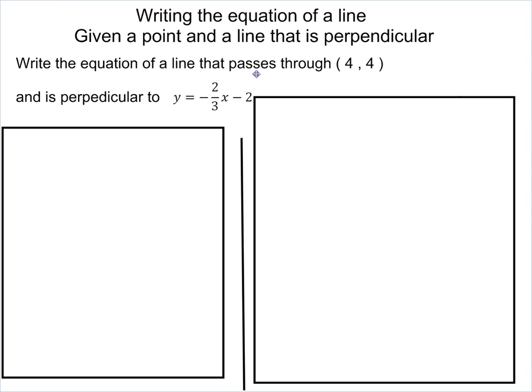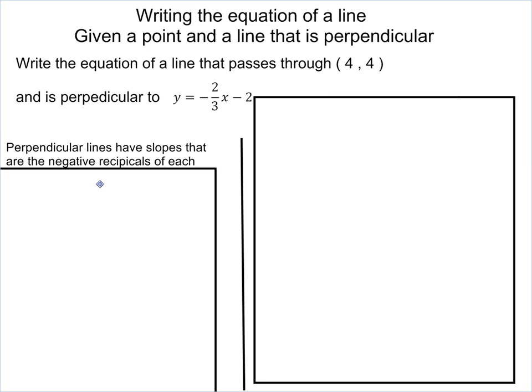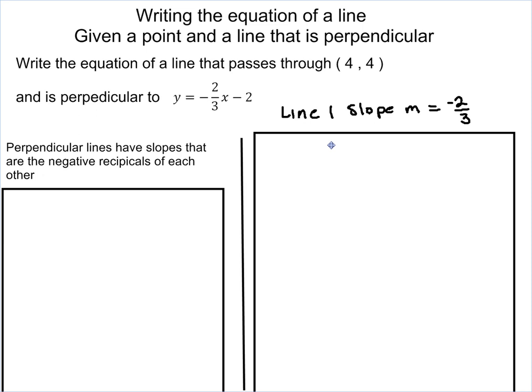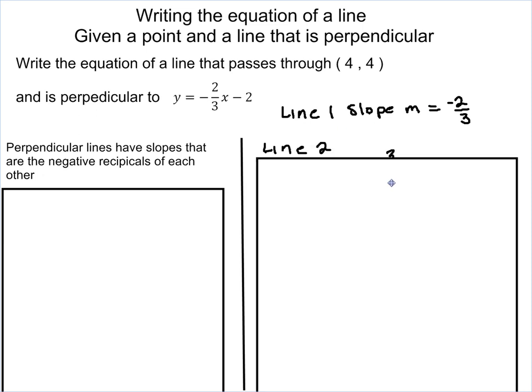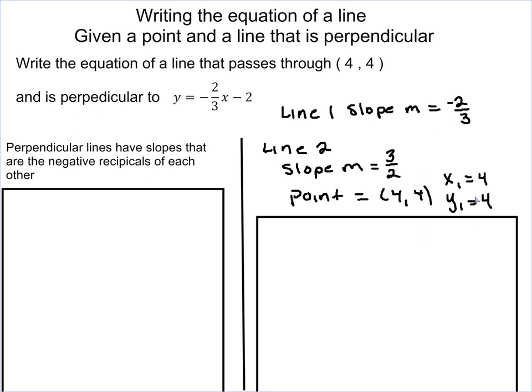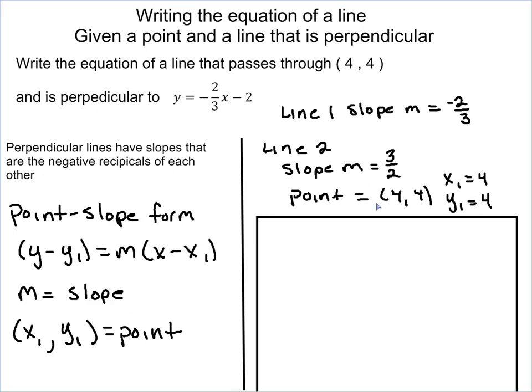A line that's perpendicular to it, if you notice, we have the exact same thing. The only difference is we're looking for one that's perpendicular to it. If you remember from the slopes, perpendicular lines have slopes that are the negative reciprocals of each other. Which means, if my slope in line 1 is negative 2/3, my slope in line 2 is going to be 3/2. We're going to flip the fraction over, which is the reciprocal, and change the sign. My point is still (4, 4). We're now going to use the point-slope form again because I have a point and I have my slope.